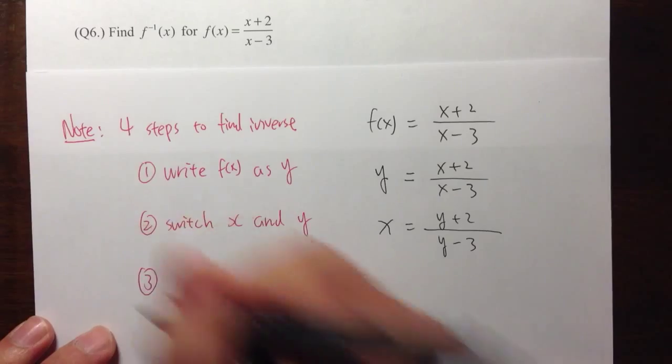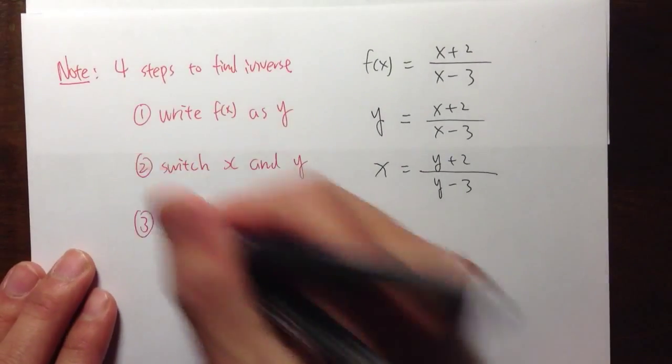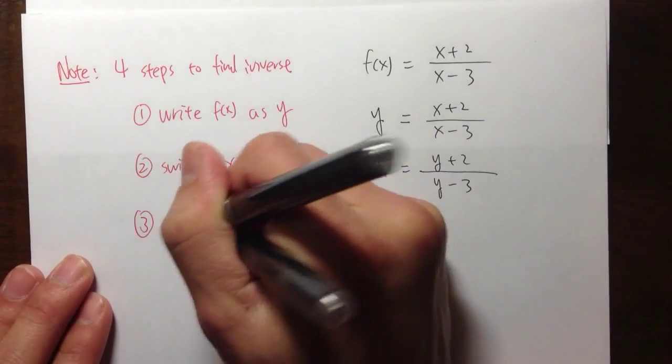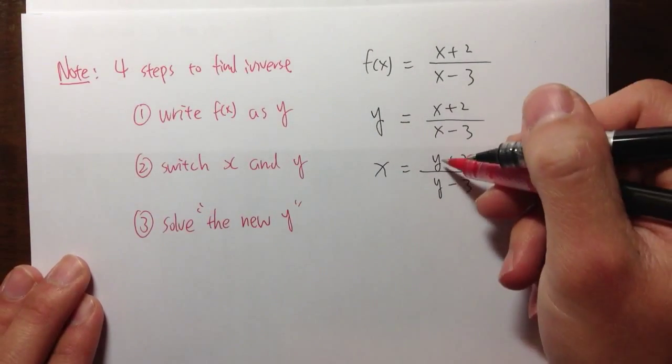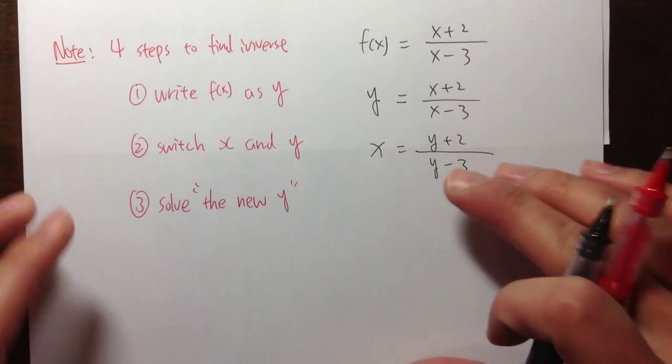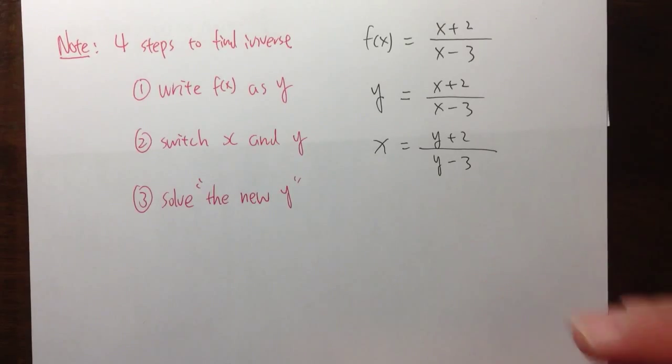Third step. This is the step line for the most work. We are going to solve, which means that we are going to isolate the new y. So we are going to isolate this y. And again, this is the step line for the most work. And here we go. Let's see how to do this.